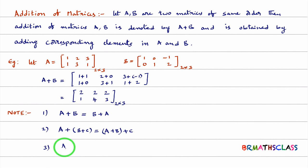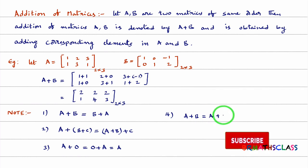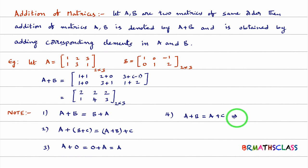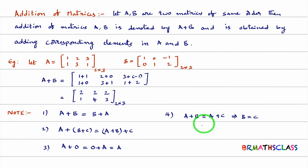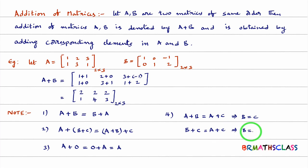The third property: identity law exists — A plus zero matrix equals zero plus A equals A. The fourth property: in addition of matrices, cancellation law holds good. For example, if A plus B equals A plus C, we can cancel A from the left-hand side to get B equals C. Similarly, right cancellation law also holds good — if B plus C equals A plus C, then C gets cancelled and you get B equals A.